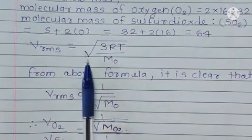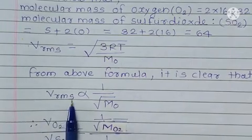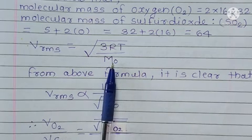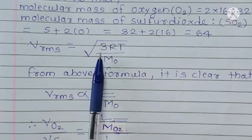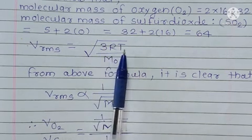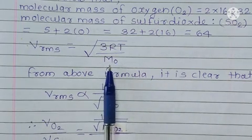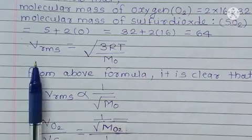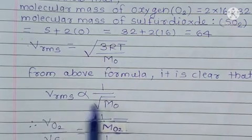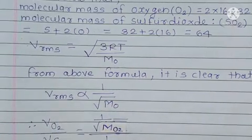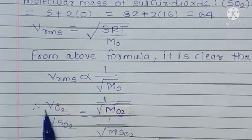Now, VRMS is given by root of 3RT upon M0. From above formula it is clear that VRMS is inversely proportional to square root of M0.